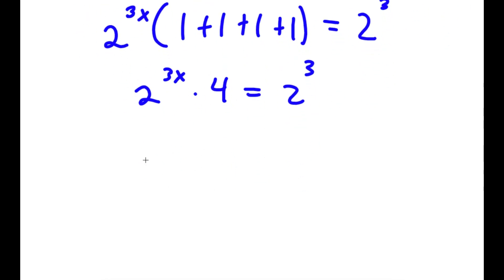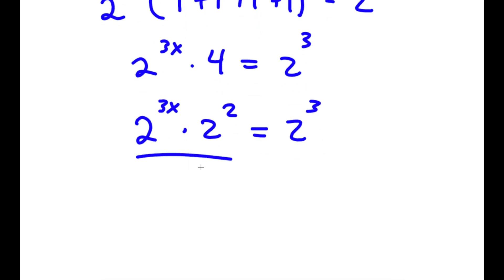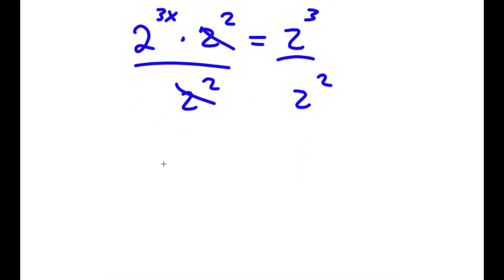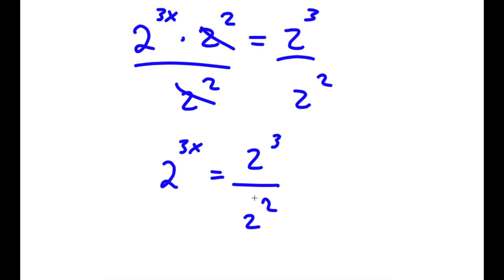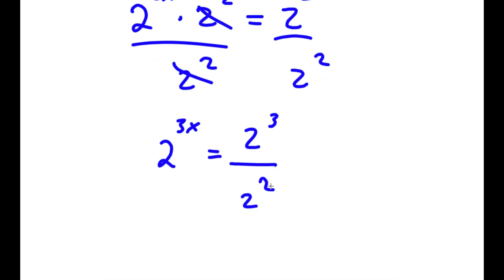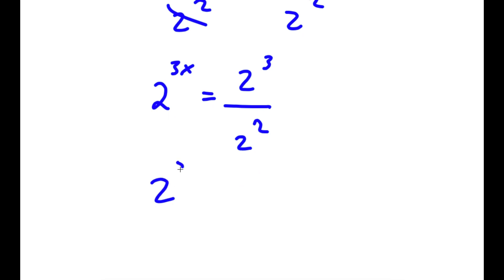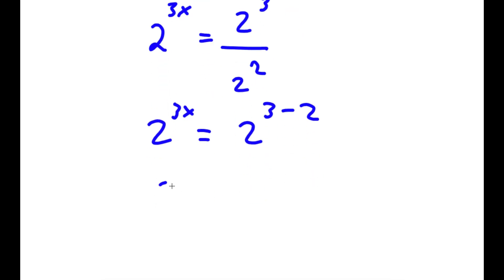Now, 4 is the same thing as 2 squared. And I can divide both sides by 2 squared, so these two cancel out. Now I have 2 to the power of 3x equal to 2 to the power of 3 over 2 to the power of 2. And 2 to the power of 3 divided by 2 to the power of 2 equals 2 to the power of 3 minus 2, which is 2 to the power of 1.